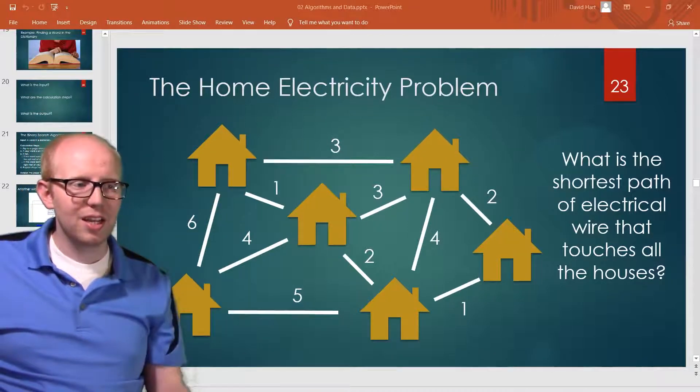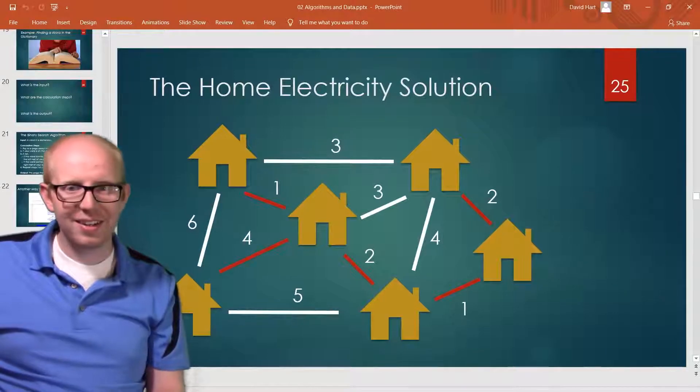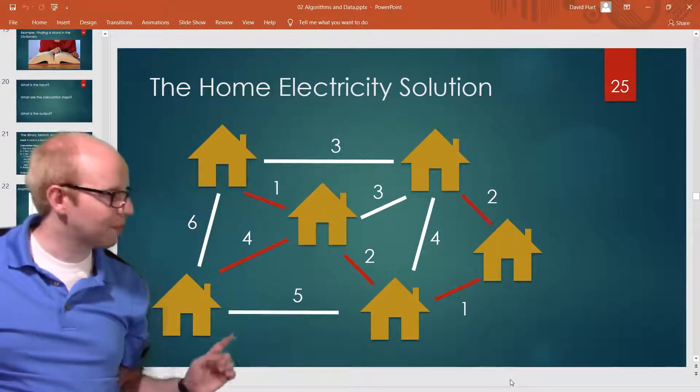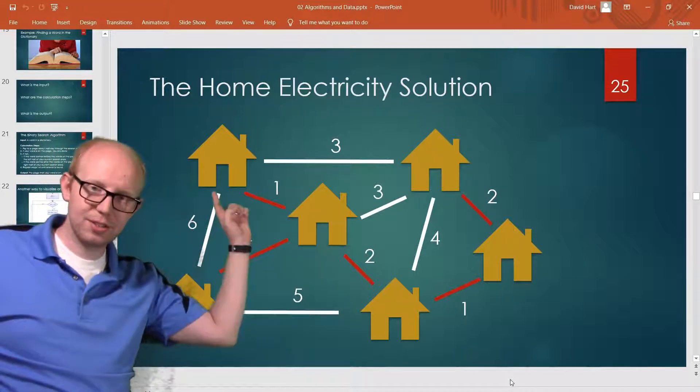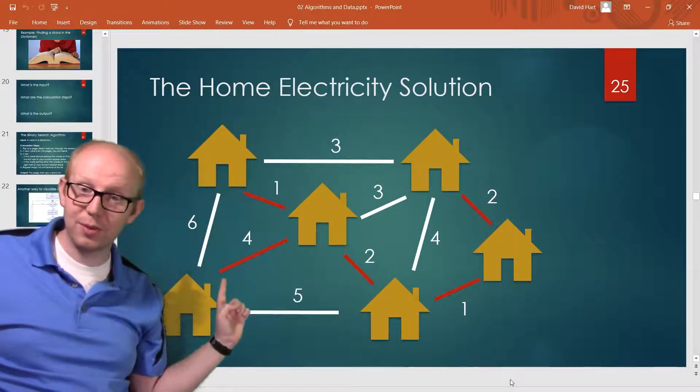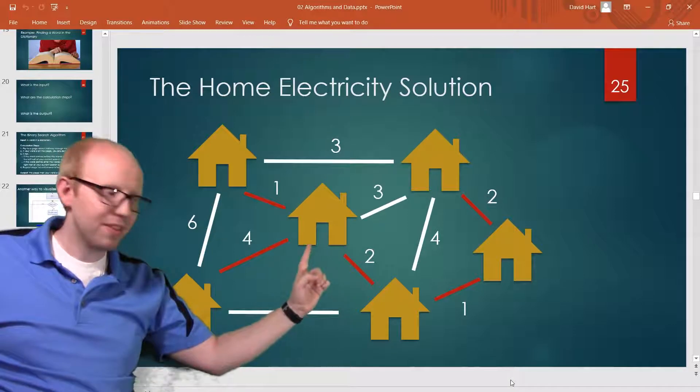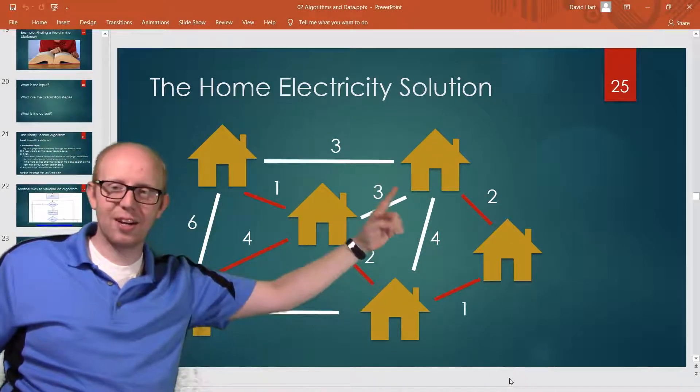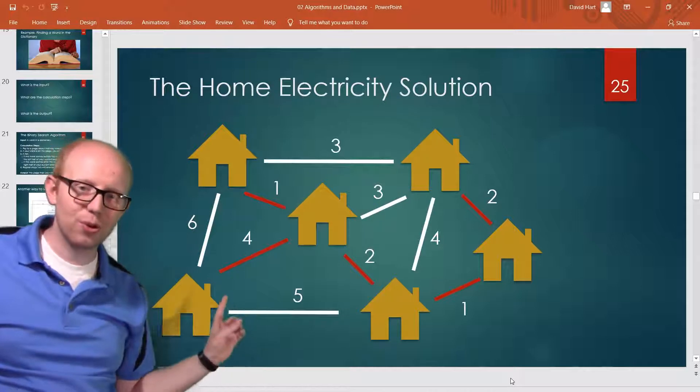If you did it right you should have gotten this setup. The best connection is to connect these two houses this way as we had mentioned before. Then connect that house, connect that house over there, and then connect this house. So that's the shortest distance between all the houses where all of them are connected to at least one wire.